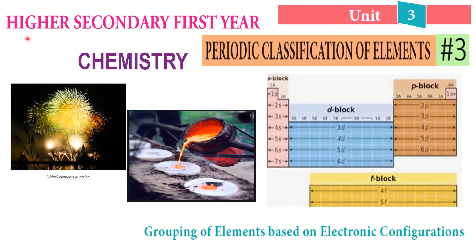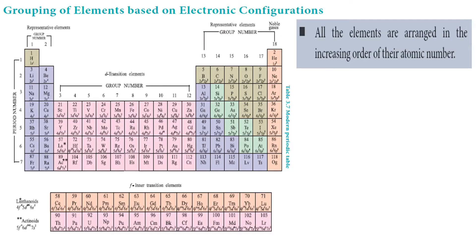Dear students, today we are going to discuss higher secondary first year chemistry, unit 3: periodic classification of elements, part 3. In this video lesson, we are going to see the grouping of elements based on electronic configuration. According to electronic configuration, elements follow a grouping pattern. All the elements are arranged in the increasing order of atomic number, which is the fundamental property.